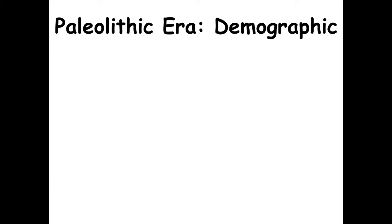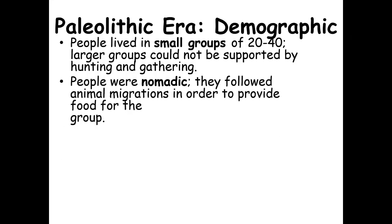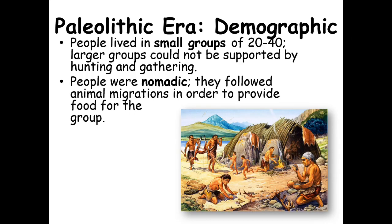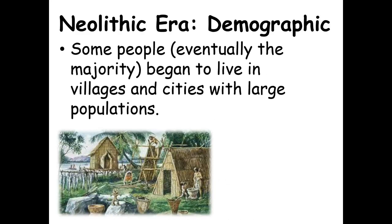Demographic aspect: In the Paleolithic era, people lived in small groups of 20 to 40 — larger groups could not be supported by hunting and gathering, since you couldn't gather or hunt enough food within walking distance to support more. People were nomadic, following animal migrations to provide food. In the Neolithic era, once people learned to farm, some — eventually the majority — began to live in villages and even cities with large populations.